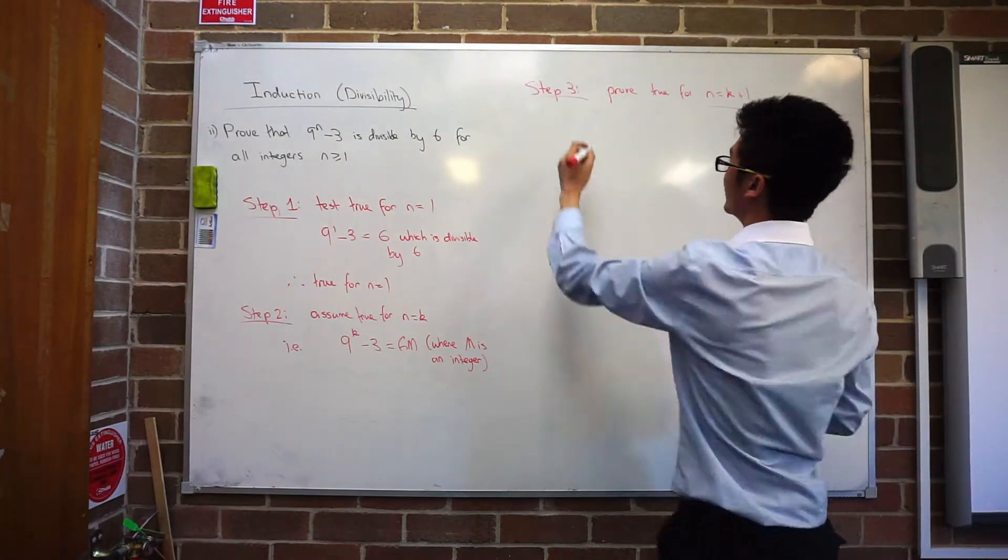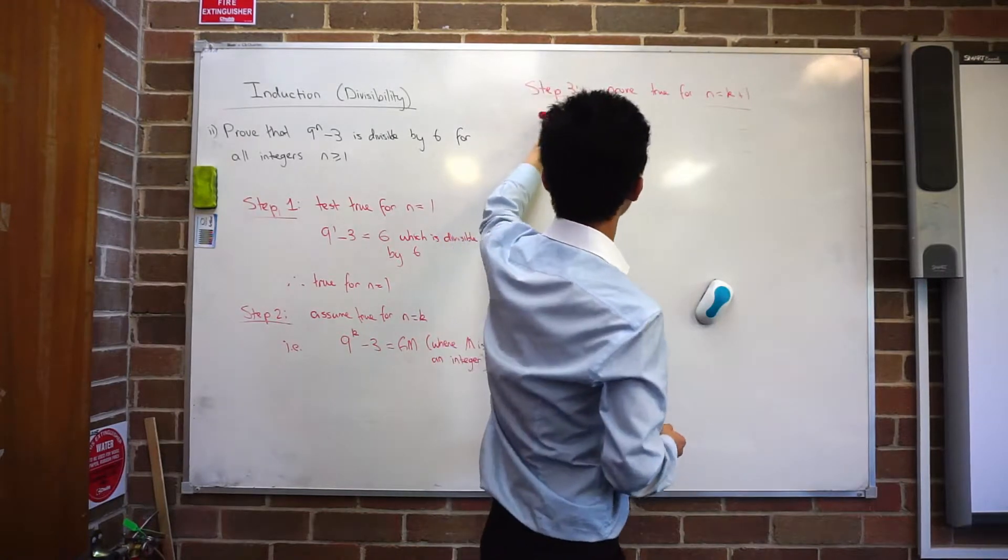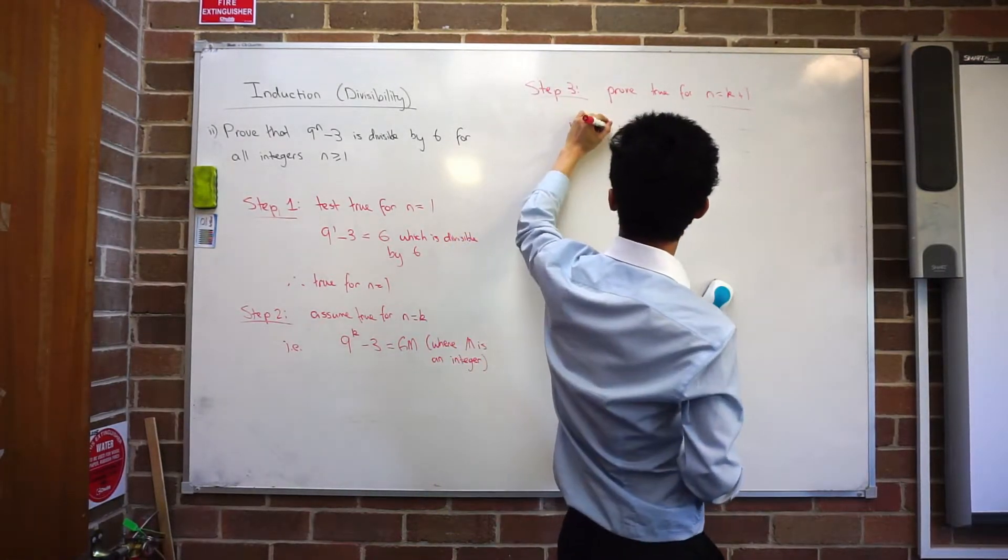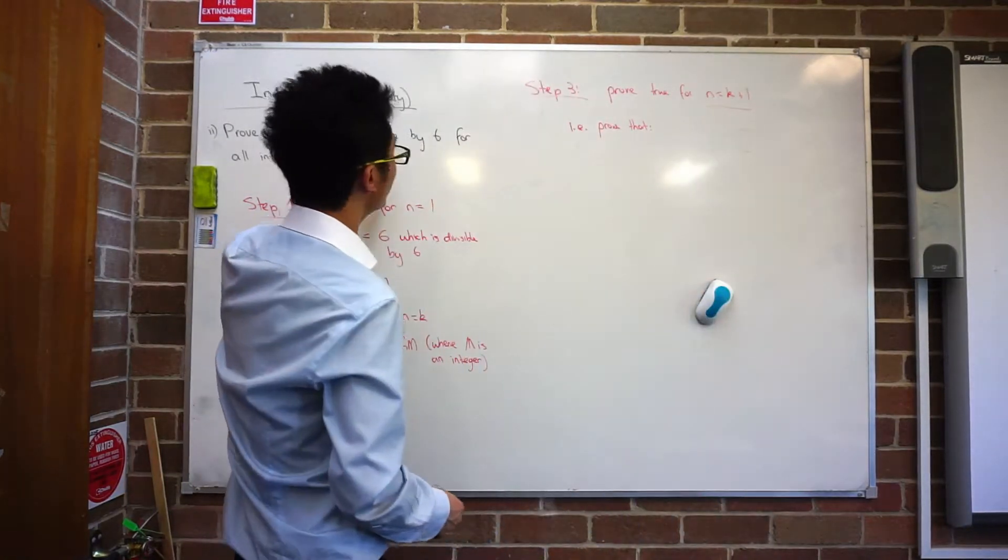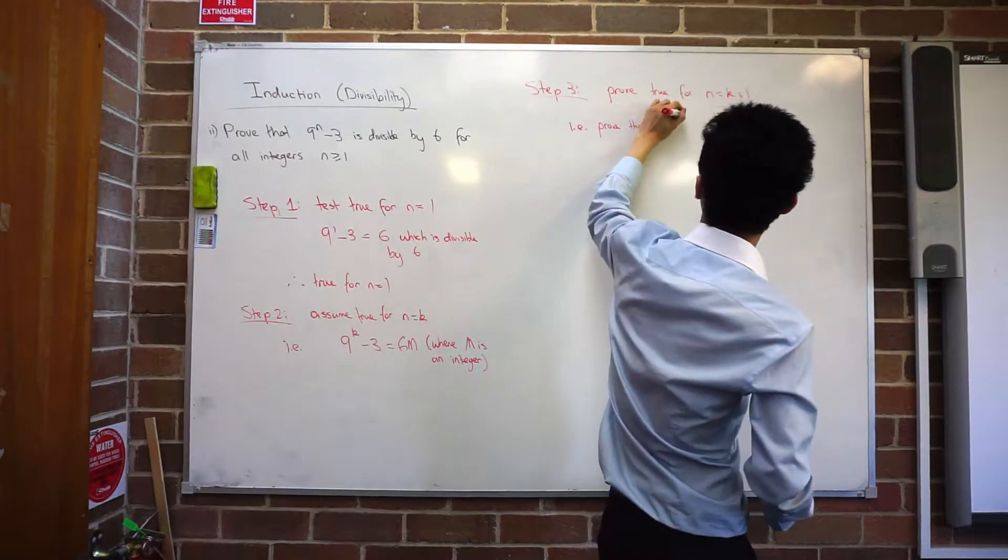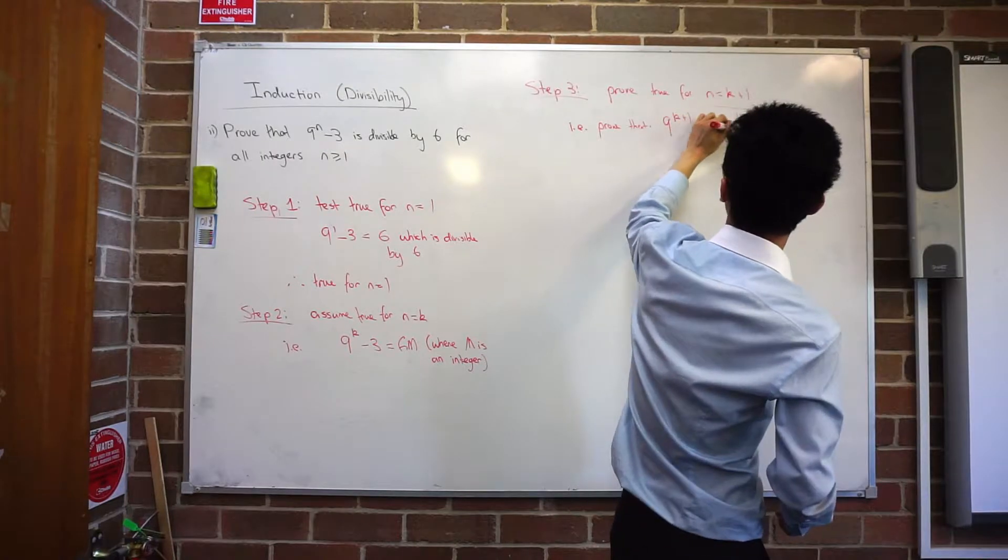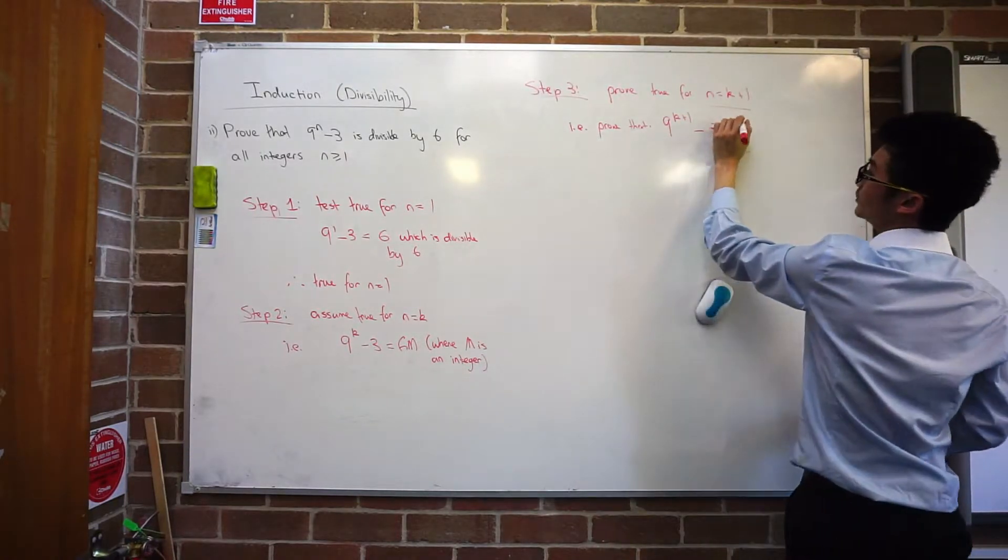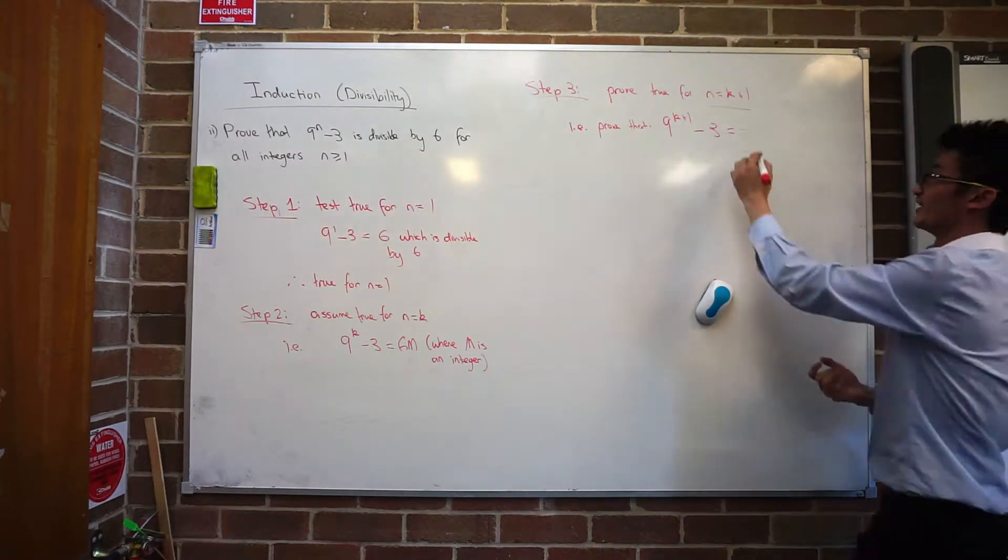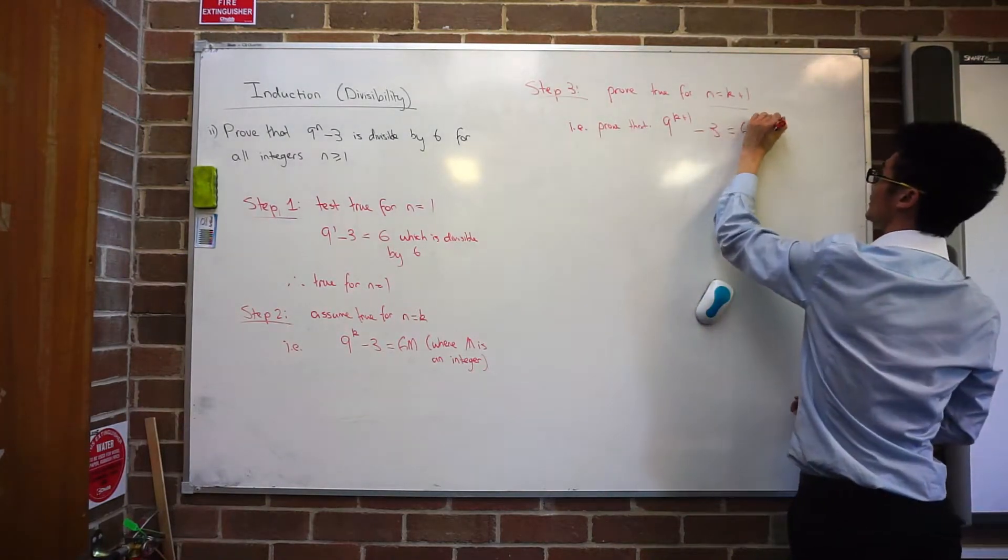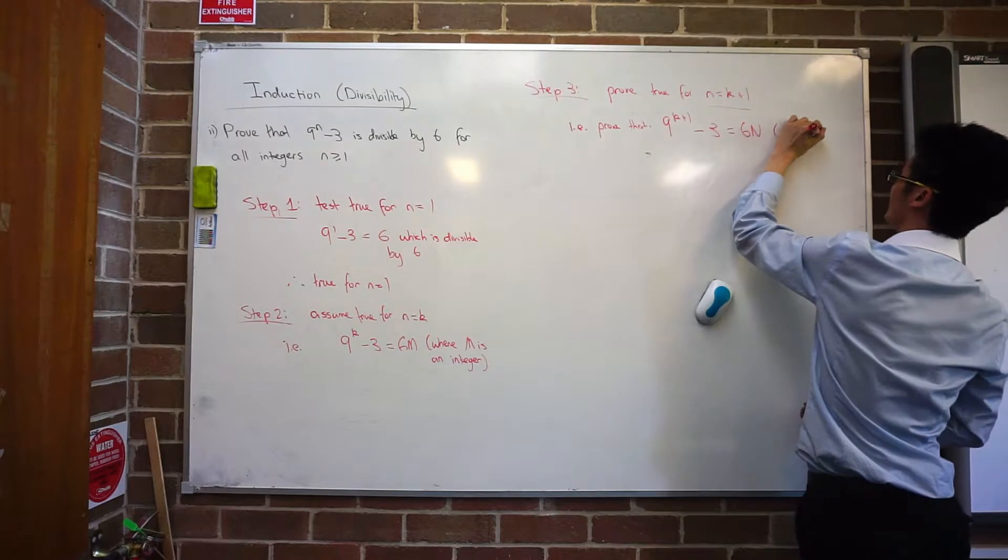And then remember, it's really good to write down what you're actually trying to prove. Prove that 9 to the k plus 1 minus 3 equals to something which is divisible by 6. And I can write that as 6n where n is an integer.